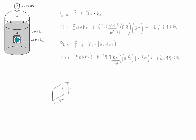We know that at the top of the plate we have a value of pressure equivalent to pt, and we know that the pressure at the bottom is slightly larger and is pb. We also know that there is a linear distribution between pt and pb.